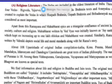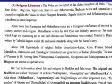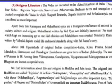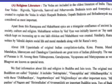Religious literature: The Vedas are included in the oldest literature of India. There are four Vedas — Rig Veda, Yajur Veda, Samveda, and Atharva Veda. Brahmin texts and Aranyakas were created to explain the Vedas, among which Shatpat Brahmin, Gopat Brahmin, and Brihadaranyaka are considered most important.